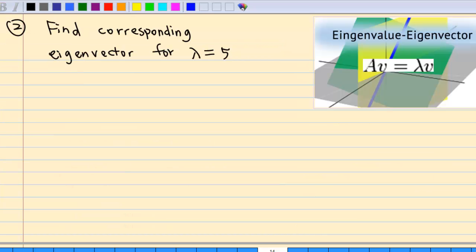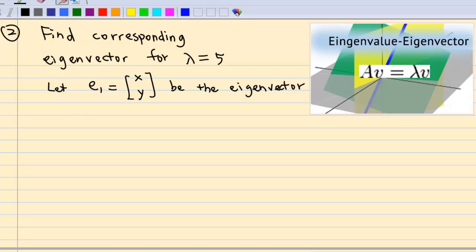Second step, we are going to find the corresponding eigenvector for lambda equal to 5. Let E1 equal to xy be the eigenvector corresponding to lambda equal to 5.